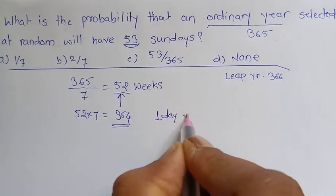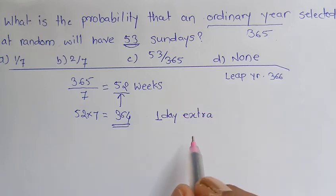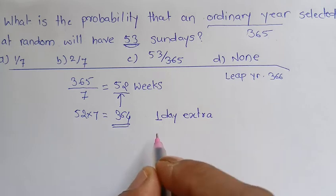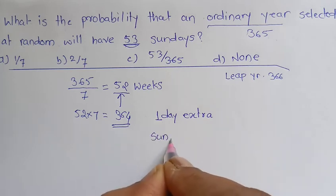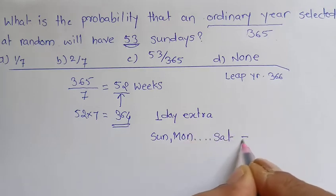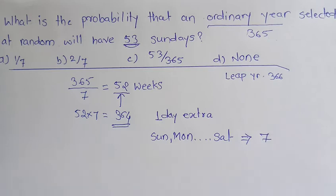Now this one day could be anything. It can be Sunday or Monday or Tuesday, it can be Sunday, Monday, Tuesday, all the way till Saturday. So I have total seven options.